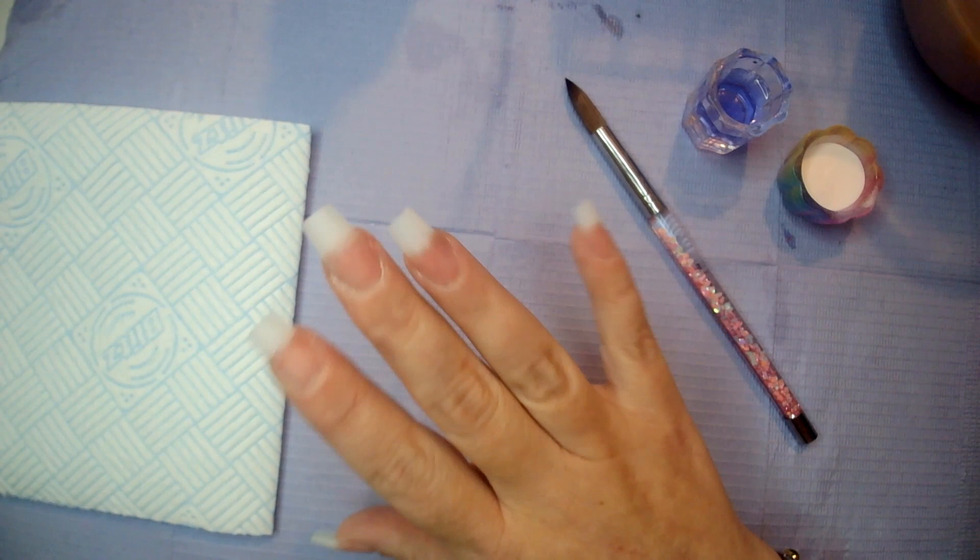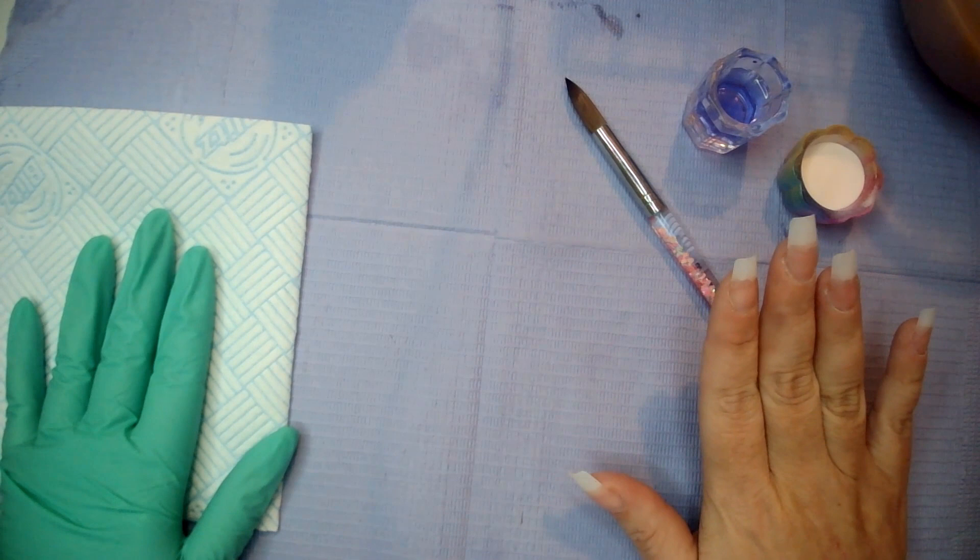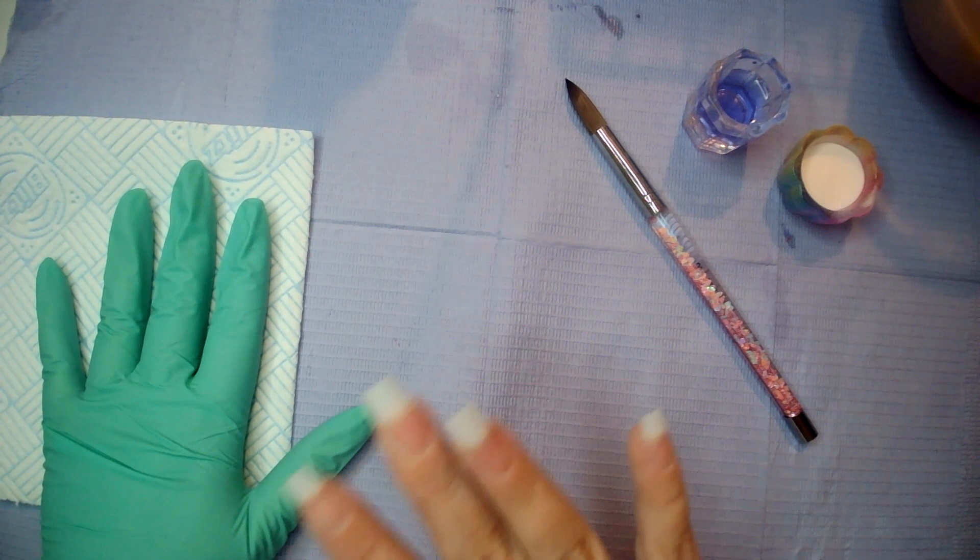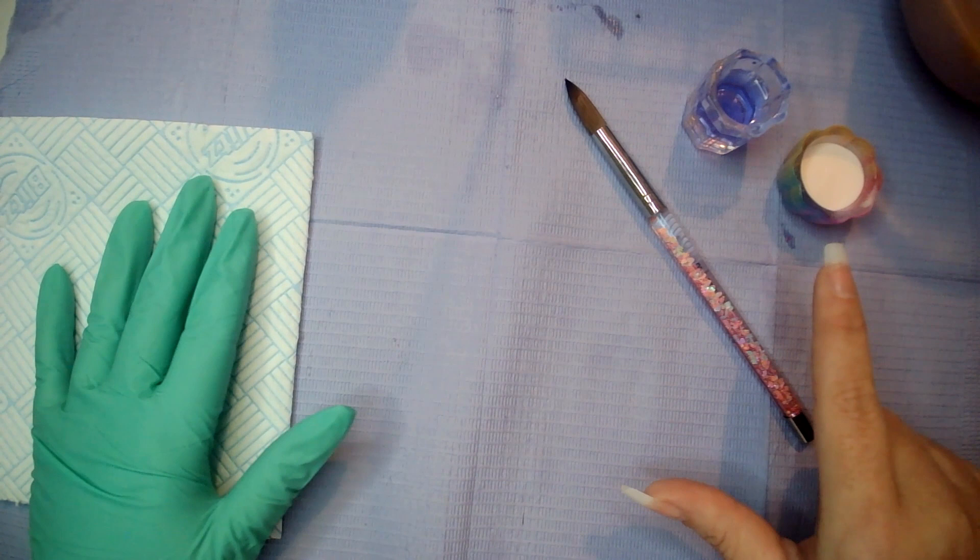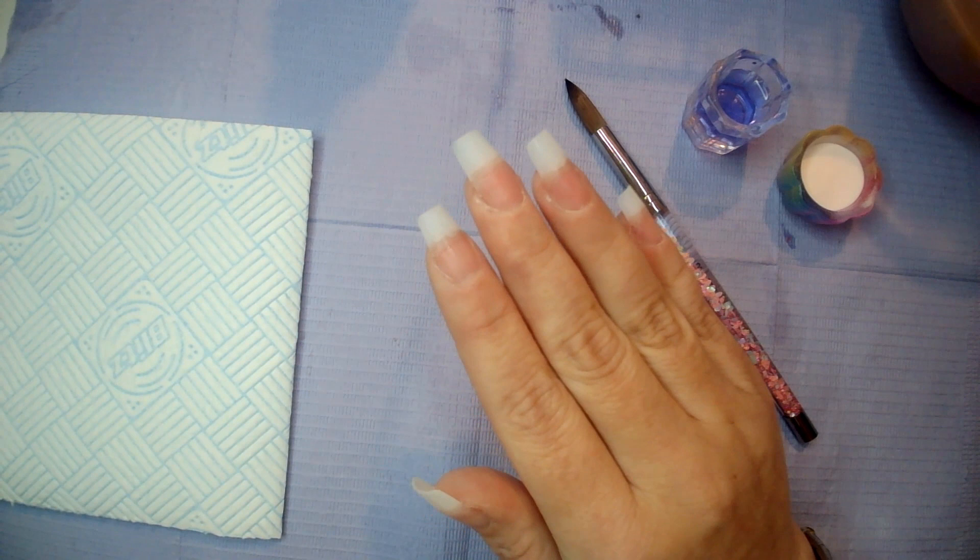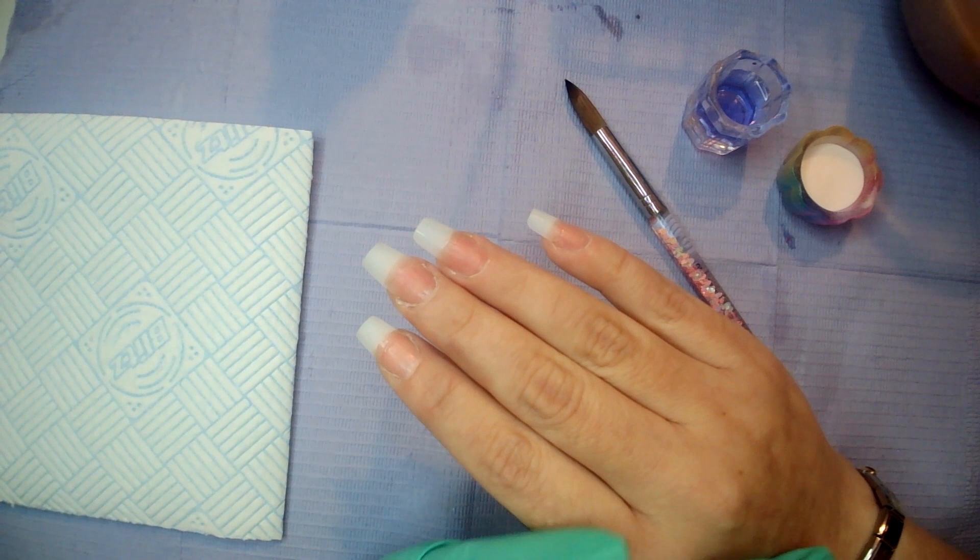So what you are going to need is the hand that you are going to be applying your acrylic to. You are going to want your acrylic brush, some kitchen roll or kitchen towel to wipe your brush off. You are going to need your monomer and your polymer, your acrylic powder. As I said, this hand has already been prepped and prepared, ready for gel application.